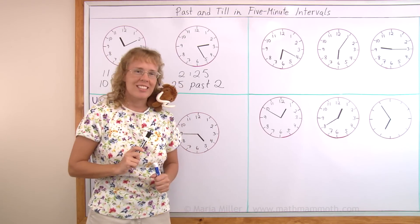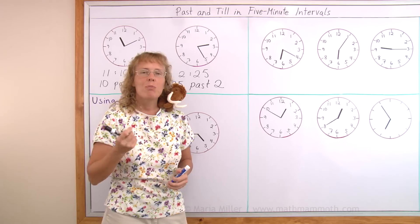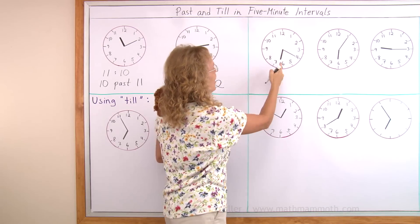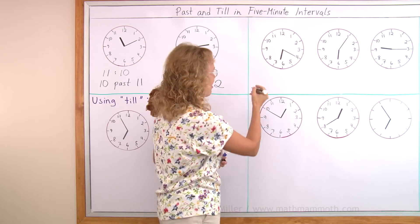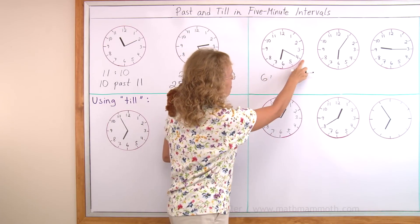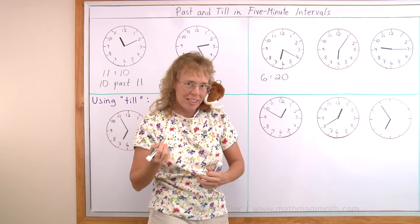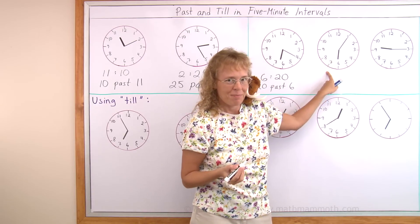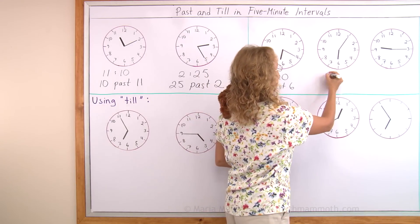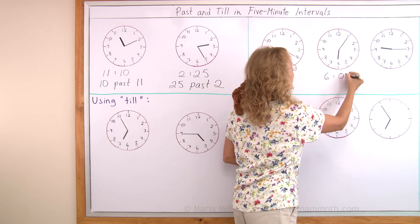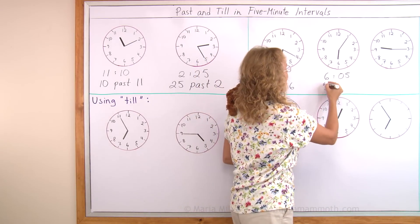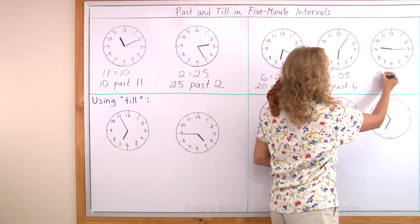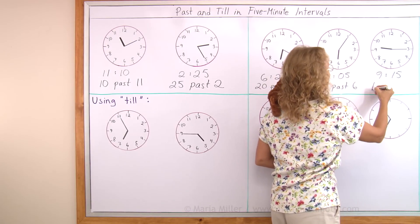Now we're going to do a few more exercises. Why don't you pause the video and try them on your own. This one: look at the hour hand — it's between 6 and 7, so it is 6 hours. And the minutes — 20. So 6:20, and the other way: 20 past 6. Over here, hour hand at 6 again, minute hand just 5 minutes — so 6:05, or 5 past 6. And the last one: hours are 9, minutes are 15, so it is 15 past 9.